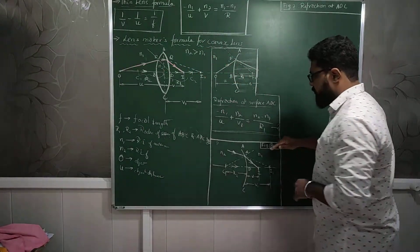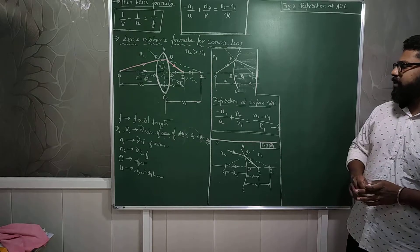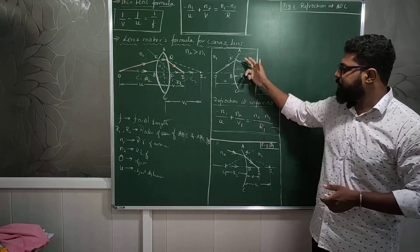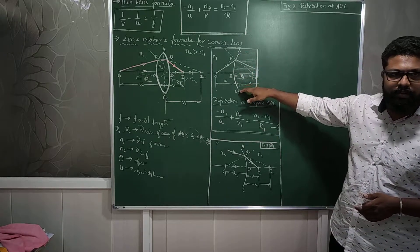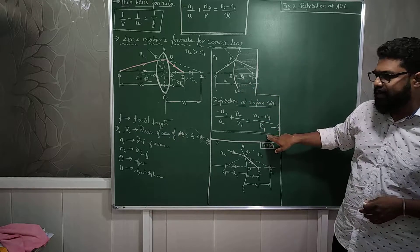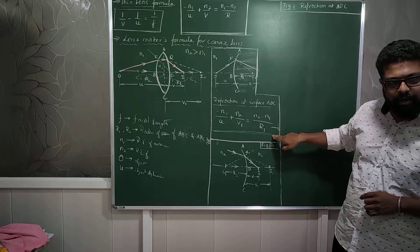So moving on to the next portion, refraction at this other surface. First we finish the refraction at ABC counter surface. We have added an equation and we name that equation as equation number 1.